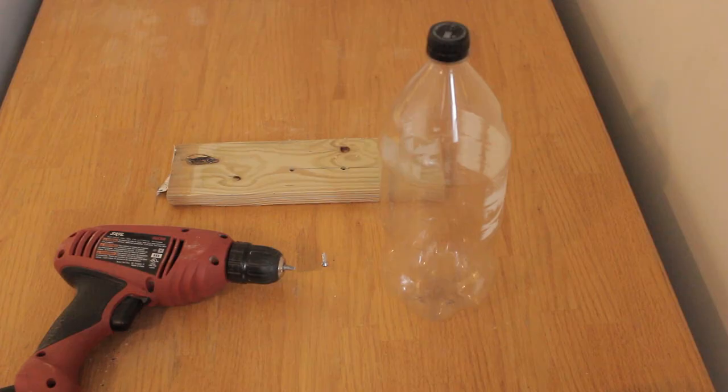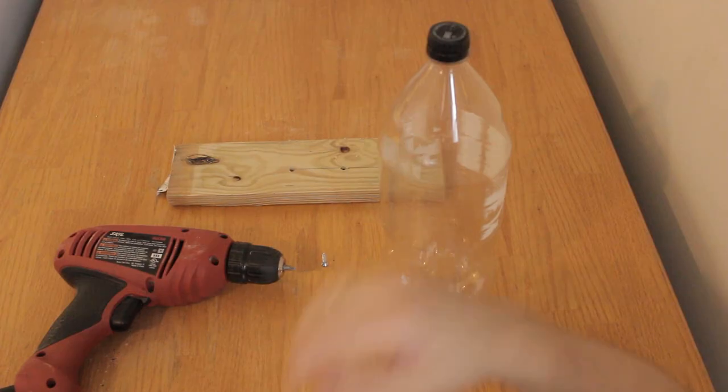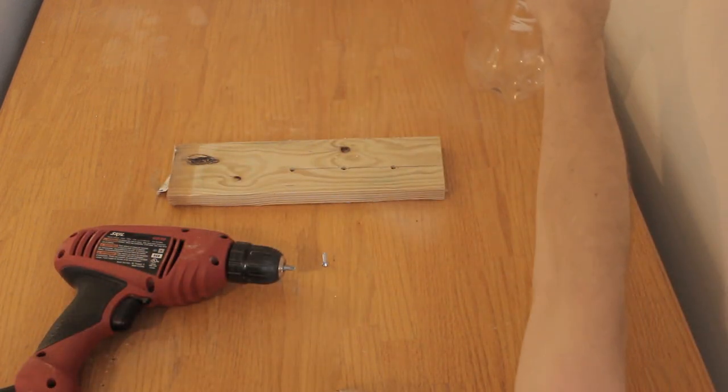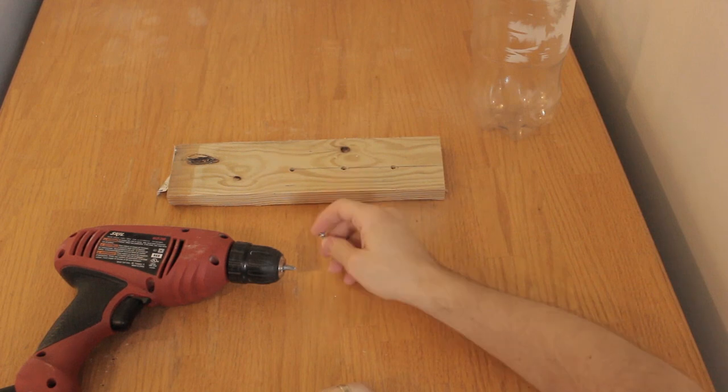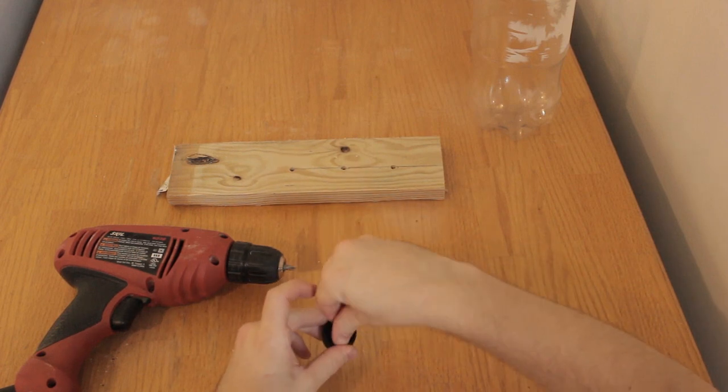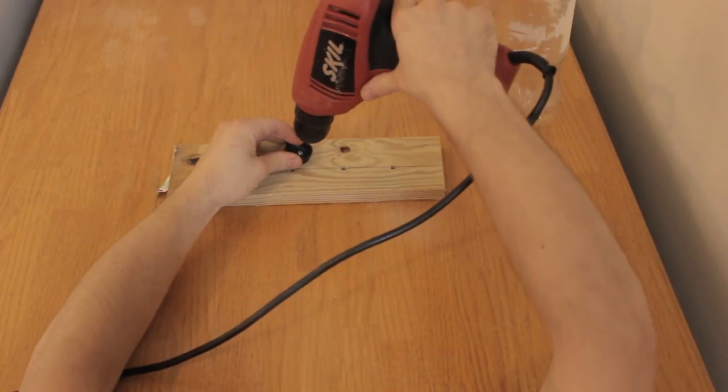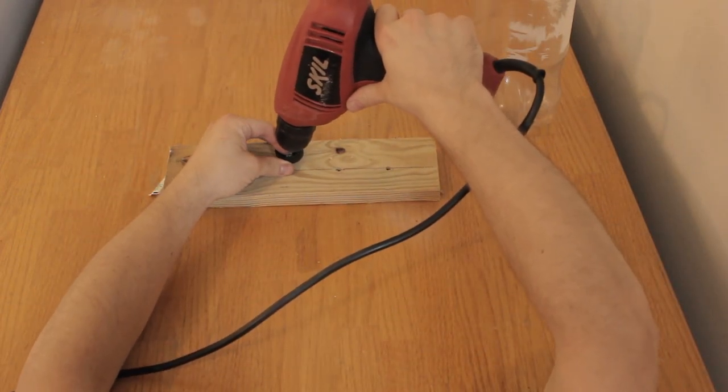So first we're going to start by building our assembly stand. We're going to take the cap off of our two liter bottle, set the bottle aside for now. We're going to take our screw and our drill and attach our cap to our block of wood. Let's go ahead and do that now.